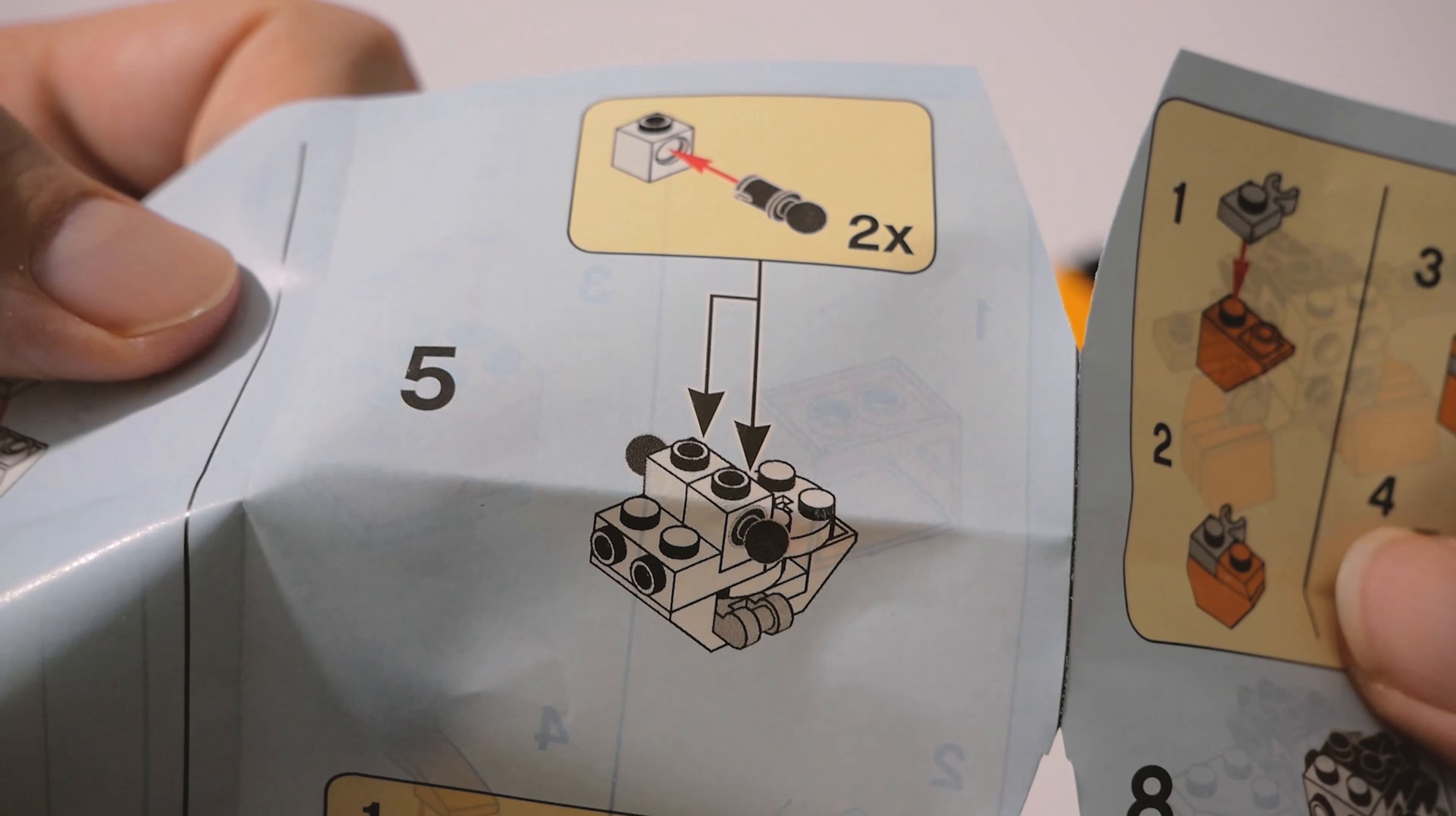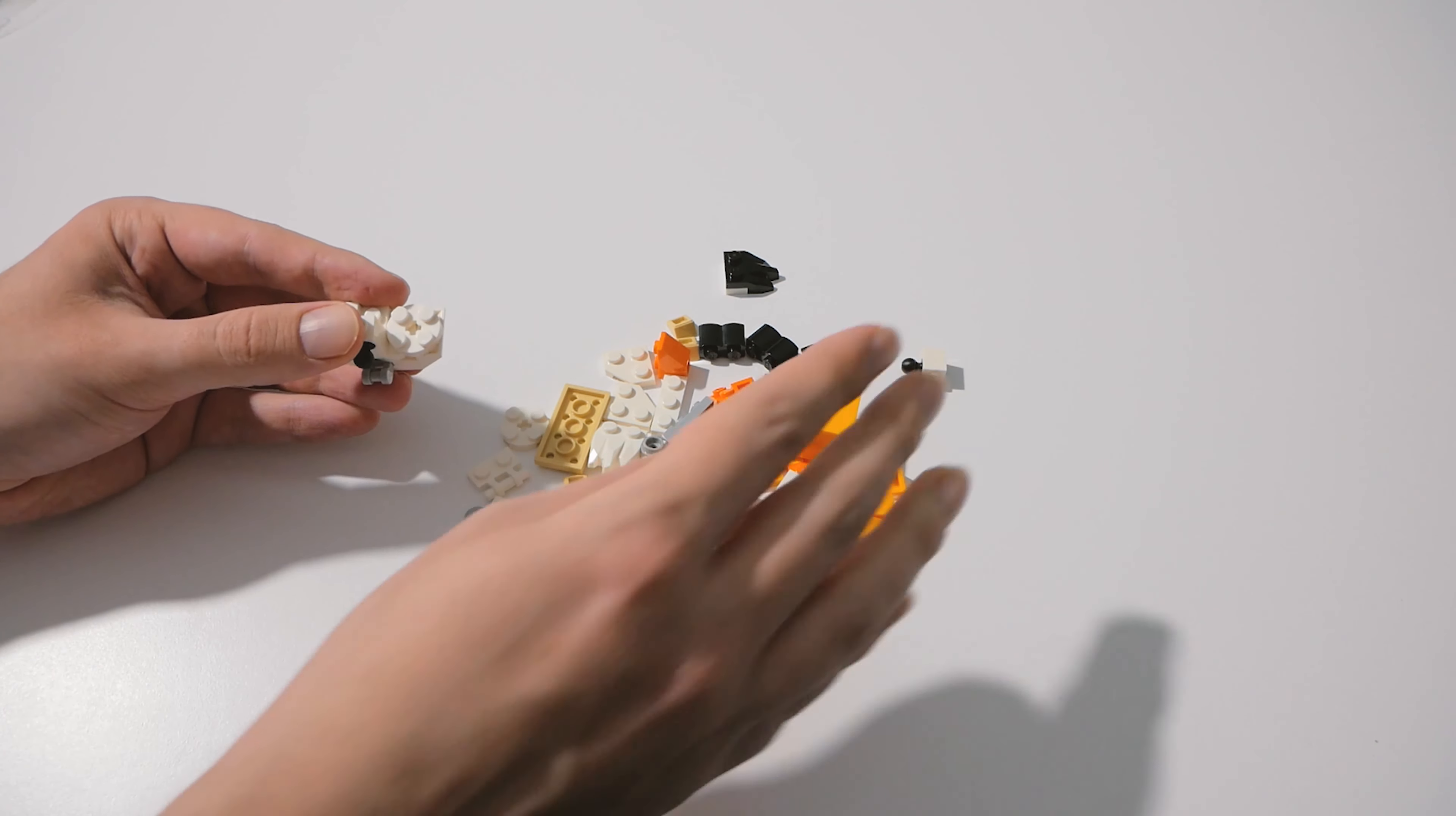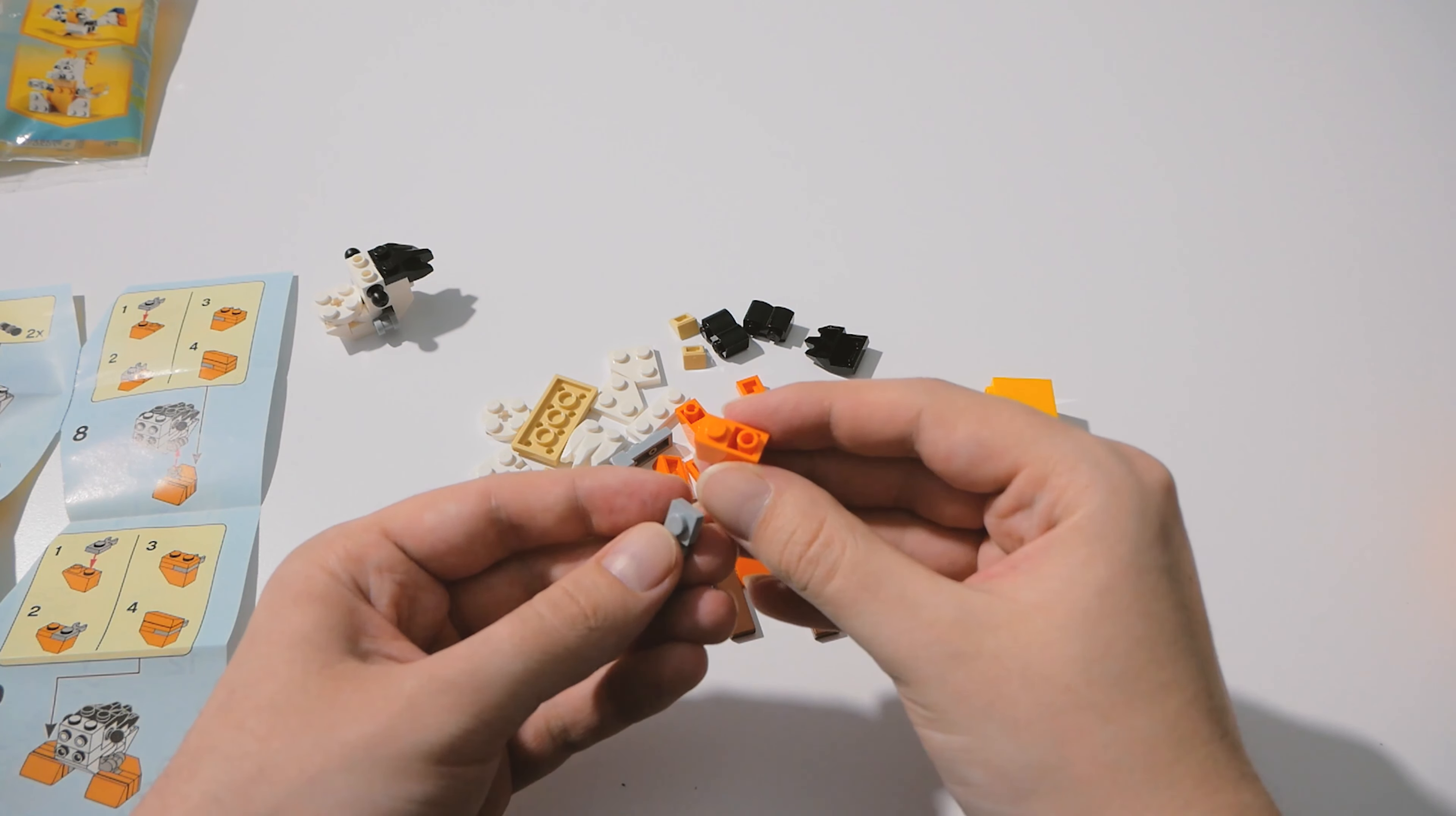In the instruction manual, okay this looks very difficult so maybe I use my other six hands to help me. Okay this is better. Okay this is finished and let's continue with these orange pieces.